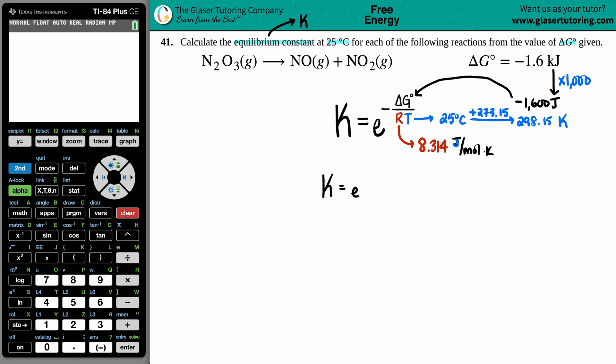K equals, let's see, K equals e raised to the negative fraction. We now have a negative 1600, and then we have the two values on the bottom, so I have 8.314, and then I have the 298.15. Keep in mind that all this is being raised by the e. Negative times a negative, that's a positive value.